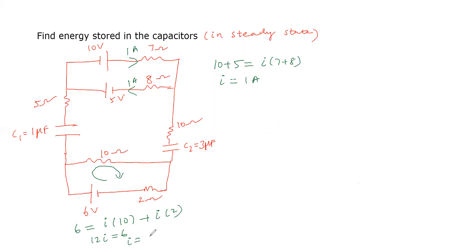Solving this, current I equals 0.5 ampere. So in this branch we get 0.5 ampere, and here also 0.5 ampere.